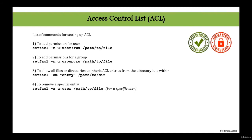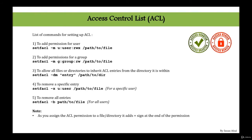To remove a specific ACL entry, run setfacl with the -x option and specify the user and the filename. To remove all ACL permissions for everyone, use setfacl with the -b option and the filename. Two important things to remember: first, when you assign ACL permissions to a file or directory, a plus sign (+) is added at the end of the permission field when you run ls -l, indicating ACL is assigned. Second, setting write (w) permission via ACL does not allow the user to delete the file — they can edit it, but deletion rights remain with the file owner.